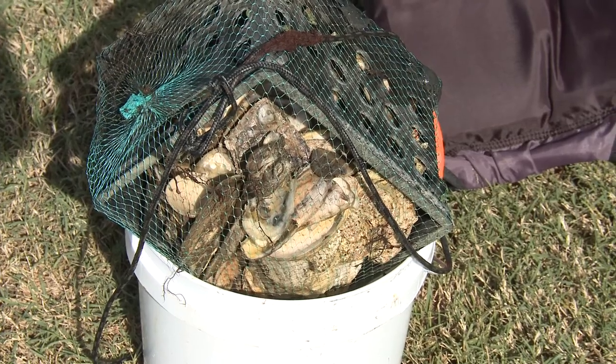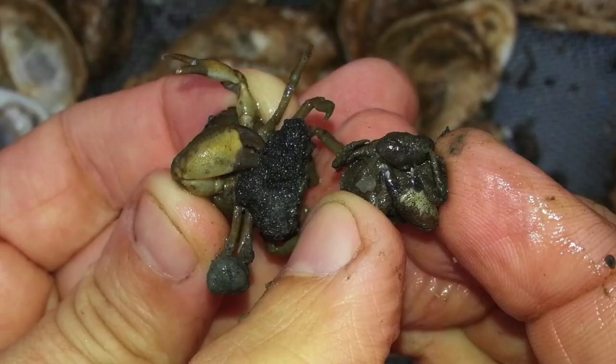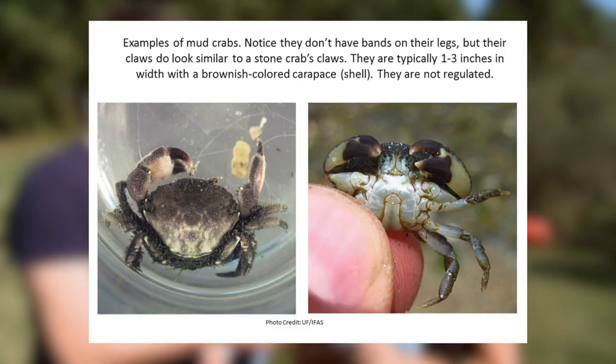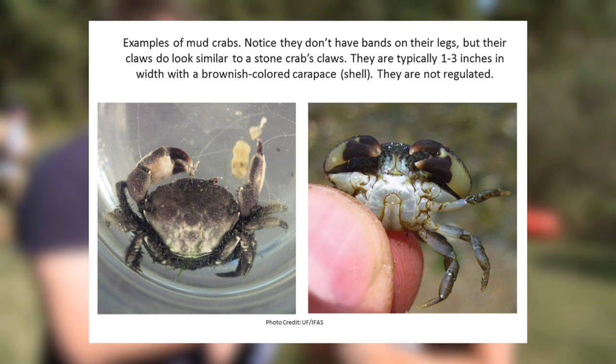We put out these small crab collectors so that mud crabs would recruit into these boxes of oyster shells, so that we could look for a parasite on these mud crabs called Loxo. It's actually a barnacle parasite — it doesn't look anything like a barnacle, but it lives inside the crab, reproduces there, and actually hijacks their reproductive biology, having the crab help with its eggs. What made you pick this area?